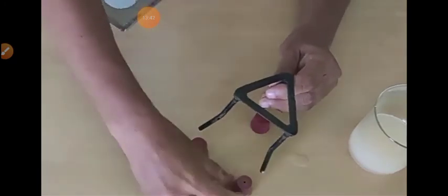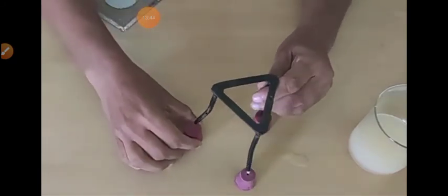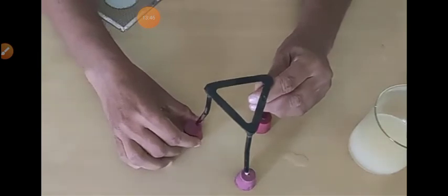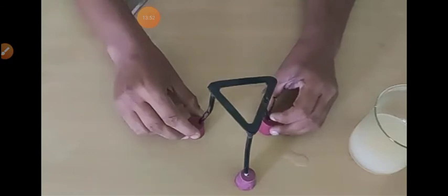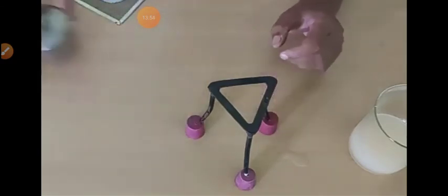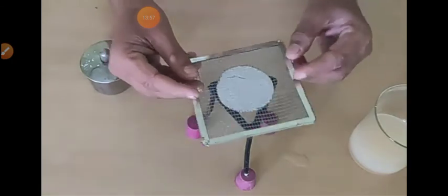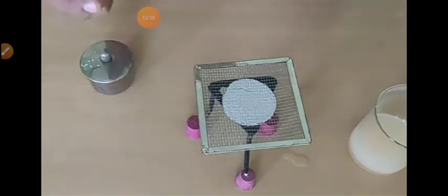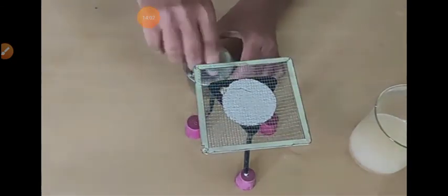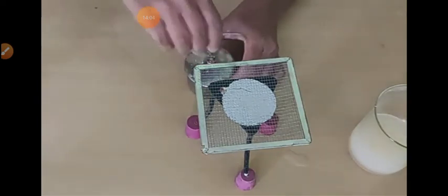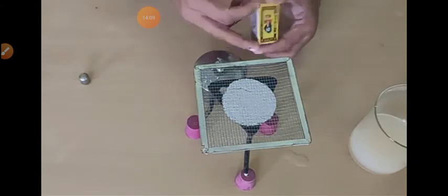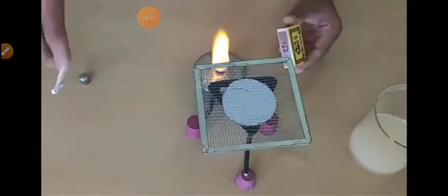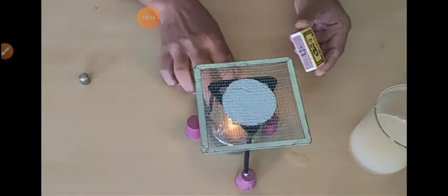Take a stand burner. This is the adjustment to heat. This is the stand and this is wire gauze. This is the spirit lamp.